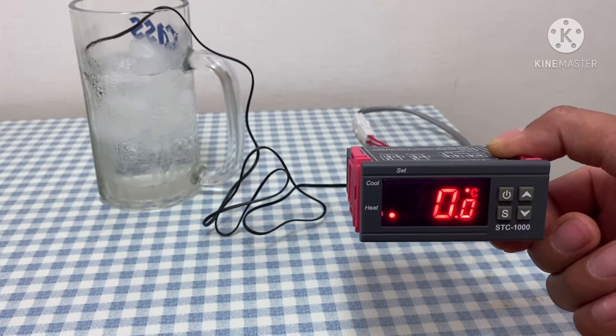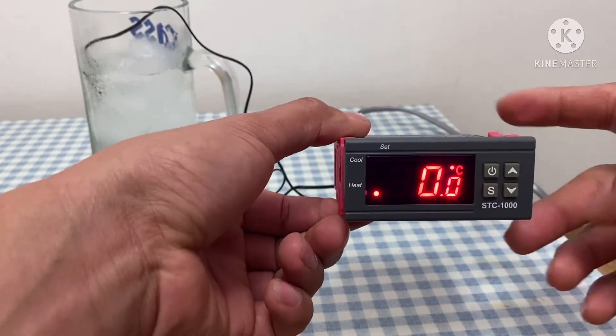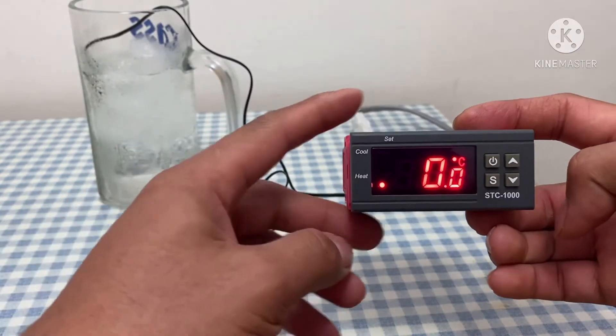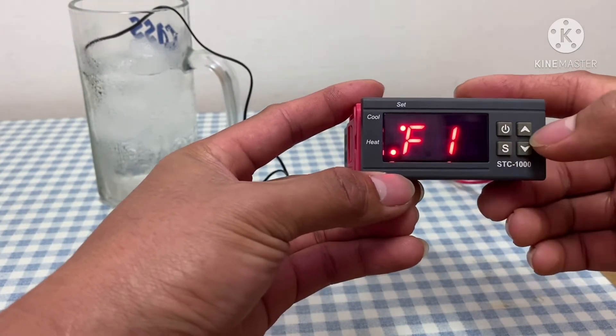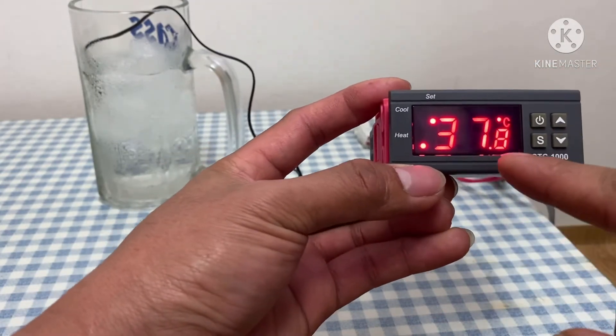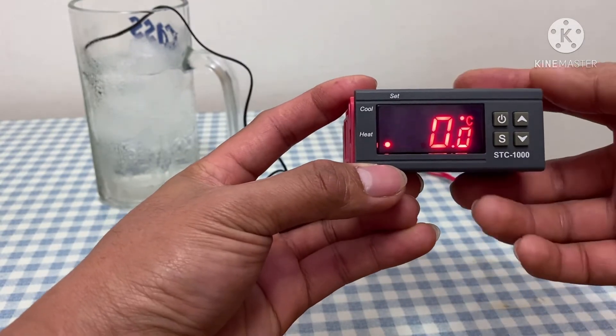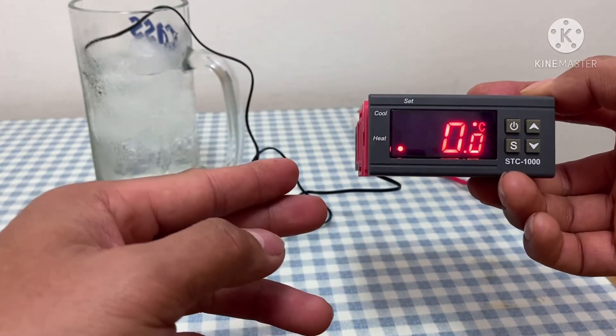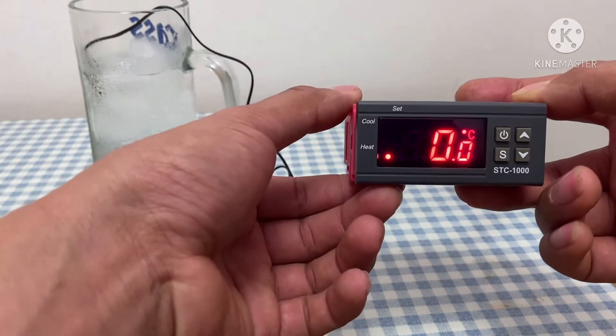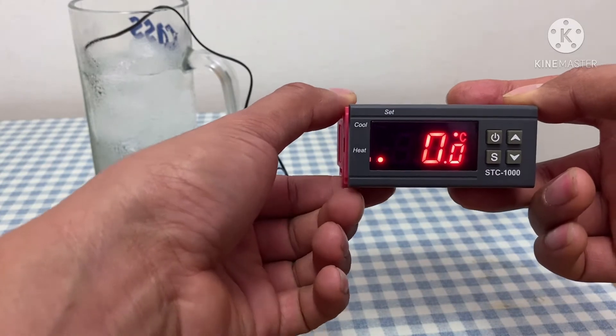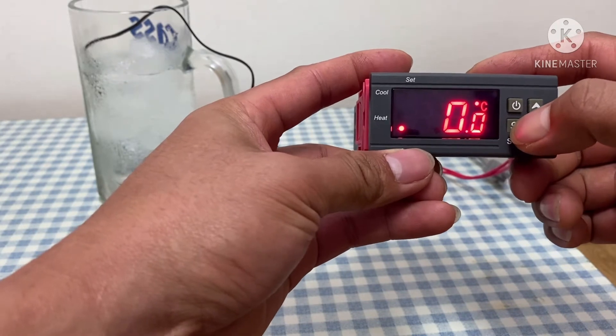I'll also teach you how to set F1, F2, F3, and F4. What are the correct settings for F1? Let's go to F1. It must be 37.8 degrees Celsius. That means to say when the temperature reads 37.8 degrees Celsius, the heater will automatically shut off. Let's see the setting in F2.